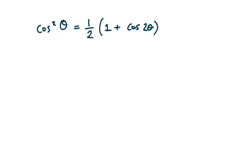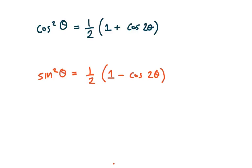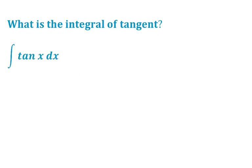In the practice exercises with this video, you'll verify that sine squared of theta equals one-half of (1 minus cosine of two theta) — using a very similar process to what we did here. Let's end this by doing a little bit of calculus, since we're talking about trigonometric integrals.